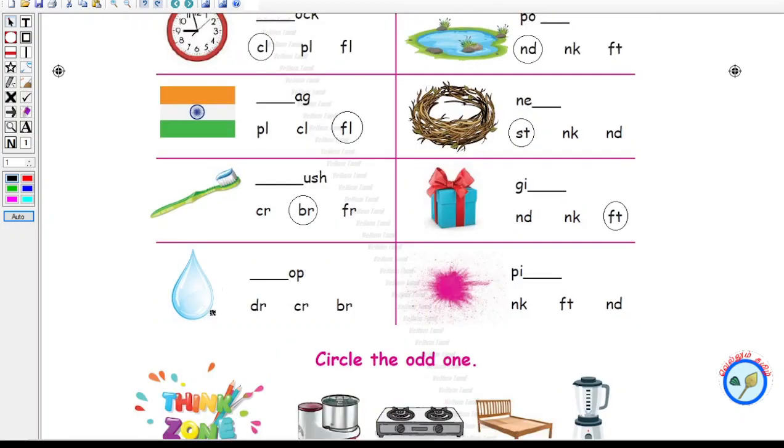What is this? This is a drop, a water drop. So what is the spelling for drop? D-R-O-P. Let me circle D-R. What is this? This is pink color. What is the spelling for pink? P-I-N-K. So let me circle N-K.